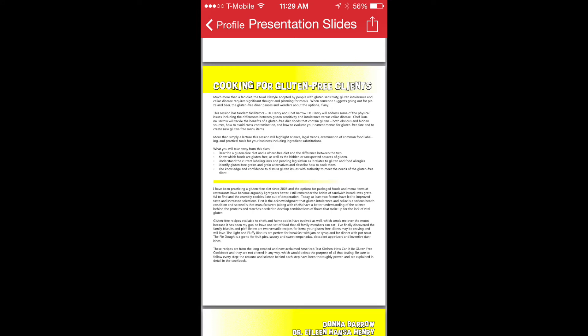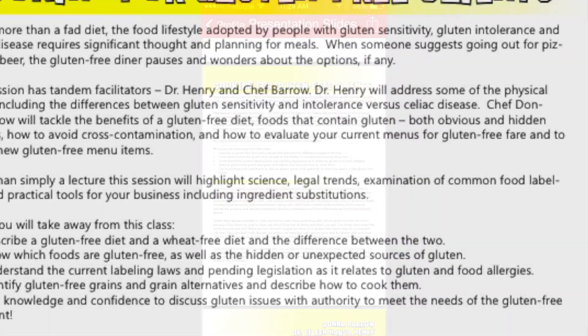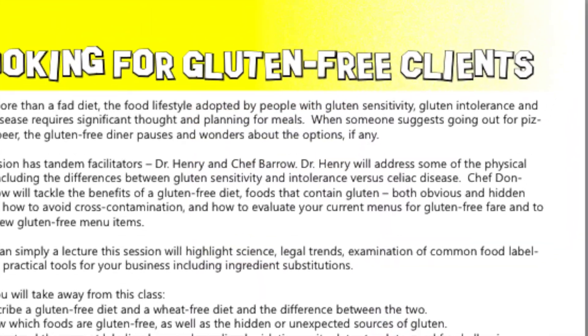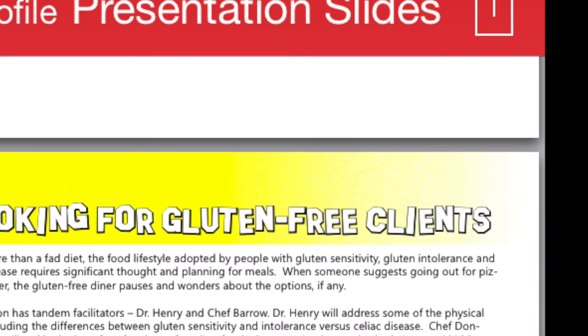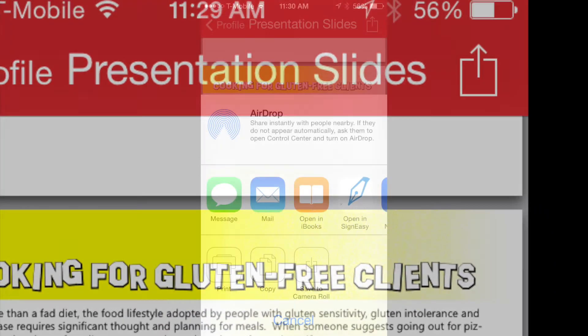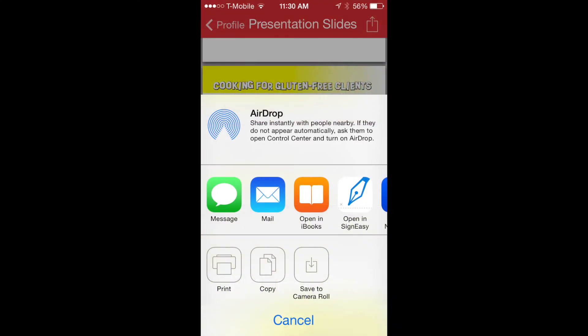Now let's move back to the top of the page where we'll see a small box with an arrow inside at the upper right — let's select it. This opens the options to print, copy, email — basically take the attachments and put them into a format that suits your needs, well before the conference.